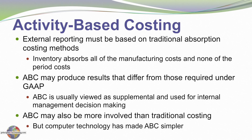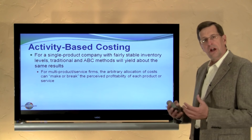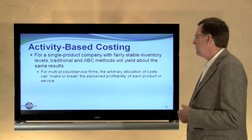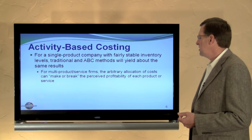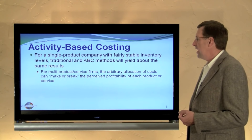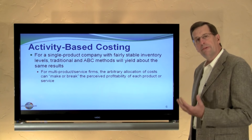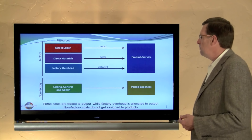Activity-based costing is in all likelihood more involved than traditional costing methods, though the process is at least simplified by computer technology. For a single-product company, there's probably very little difference between traditional costing and activity-based costing. It's in multi-product settings where we have some differences that may result in our assessed cost for products and the decisions that follow. The arbitrary allocation of cost can make or break the perceived profitability of each product or service, so a proper and full cost assessment process such as may be prevalent in an ABC system becomes quite important.